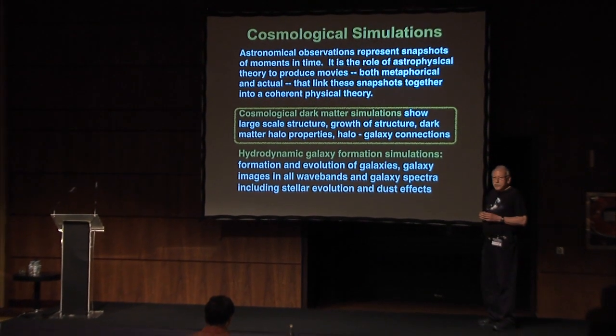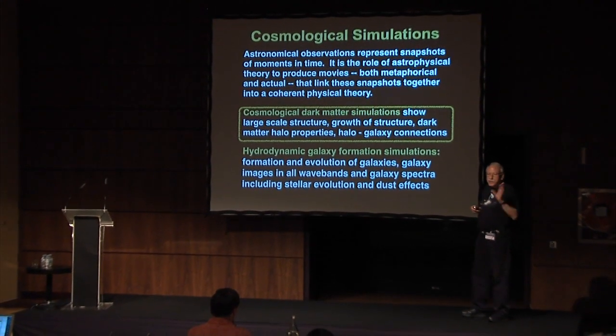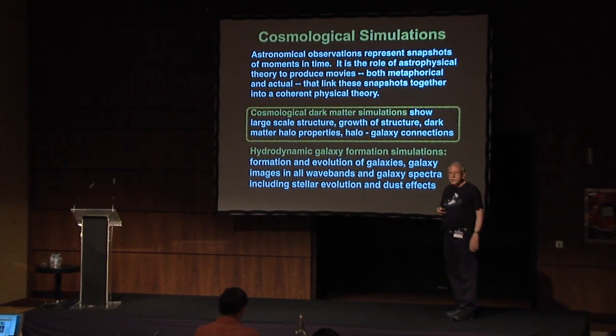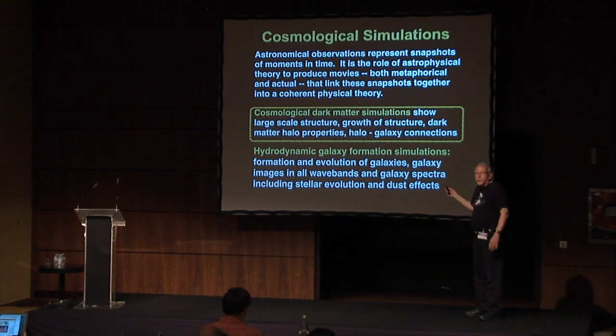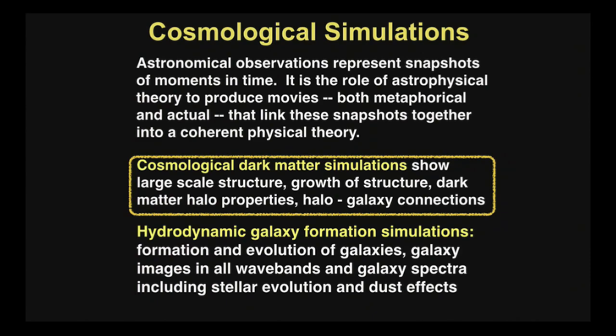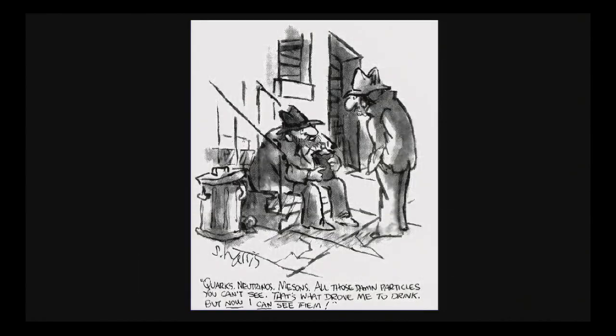Astronomical observations are snapshots — we see galaxies as the light left them millions or billions of years ago. But we theorists can make movies, either metaphorical or real, and the idea is to make a coherent physical theory that matches the observations. First I'll talk about large-scale simulations, then I'll talk about hydrodynamic galaxy simulations.